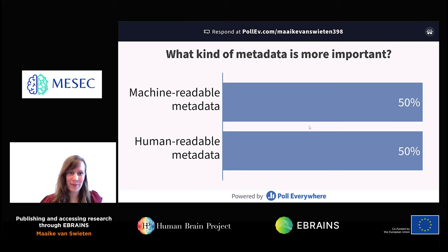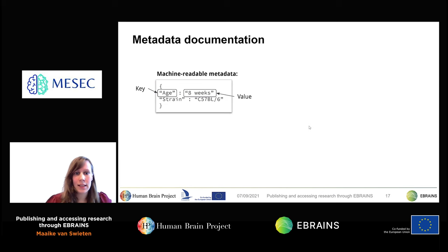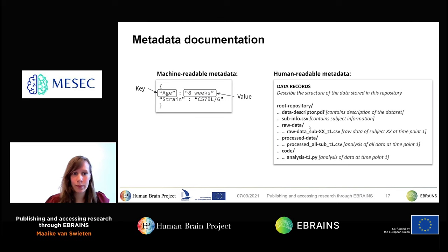Machine-readable metadata typically relies on controlled and standardized terms stored as key-value pairs. In this example, the key is the age of the animal and the value is eight weeks. Human-readable metadata, on the other hand, typically describes the process of how data is collected and analyzed, and also how data is structured.